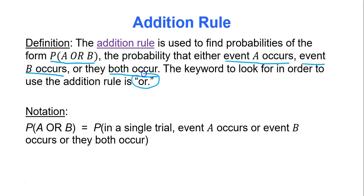The keyword to look for in your questions is the word OR — meaning this one, that one, or both of them. That's what the OR probability is, and it's the addition rule.